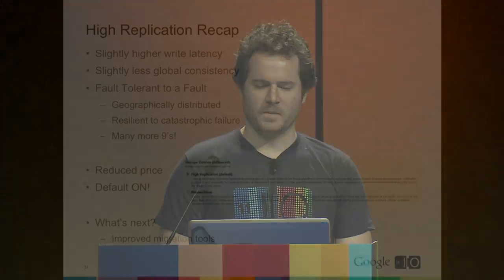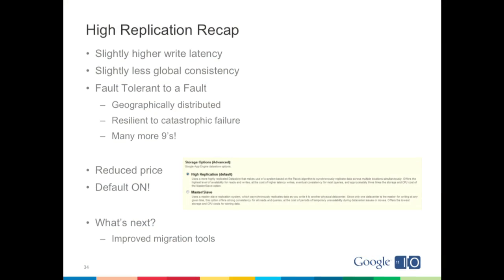As a recap: the High Replication Datastore has a slightly higher write latency, is slightly less globally consistent in the one case of global queries, but is incredibly fault tolerant — designed to be geographically distributed and resilient in the face of catastrophic failure. We believe it will get you a lot more nines. Since launch, we believe in this so much that we're setting it as the default, as we announced yesterday, and we're also lowering the price to match that of Master-Slave.